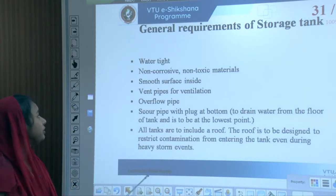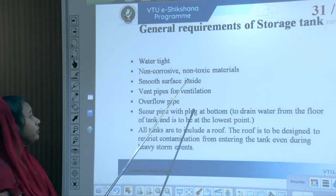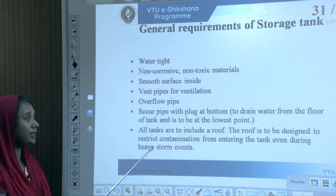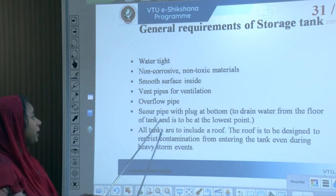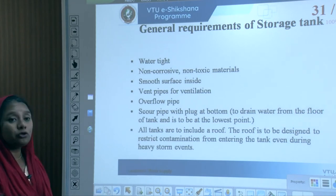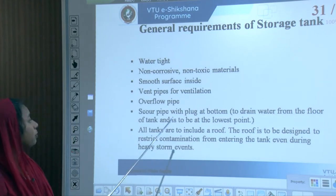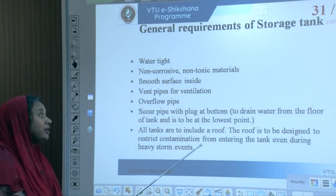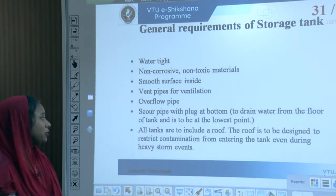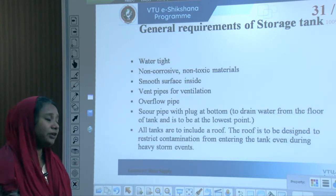General requirements of a storage tank: it should be watertight, non-corrosive, non-toxic, with a smooth interior surface. It should have vent pipes for ventilation, an overflow pipe, and a scour pipe with a plug at the bottom to drain all water — located at the lowest point for cleaning the tank. All tanks must include a roof, designed to prevent contamination even during heavy storms.